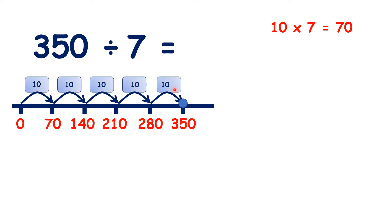So because we counted 5 steps of 10 times 7, we really counted 50 steps. So 350 divided by 7 is 50.